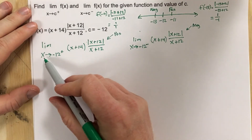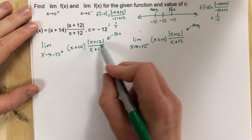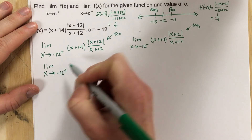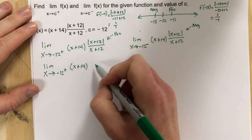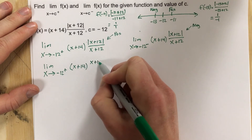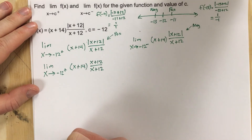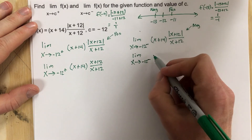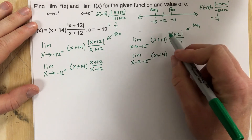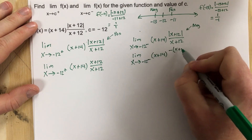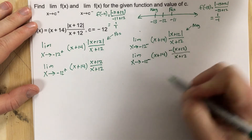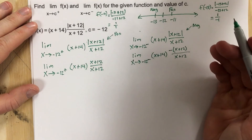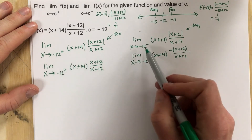When we do the limit as x approaches negative 12 from the right, we use the positive version of the absolute value, so the absolute value of x plus 12 just becomes x plus 12. For the limit from the left, we use the negative version, which means absolute value of x plus 12 becomes negative x plus 12. We do this just as we write two equations when solving absolute value equations — one positive, one negative — based on the limiting values we found.